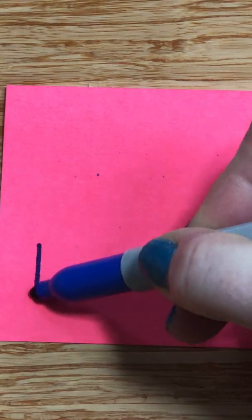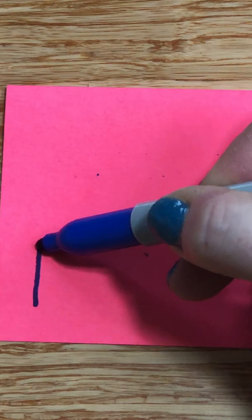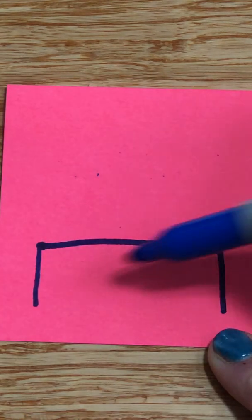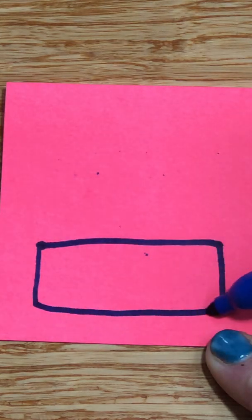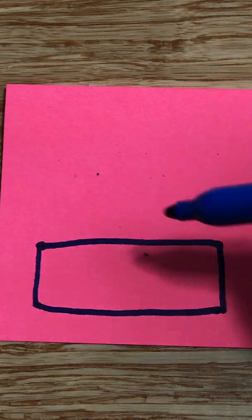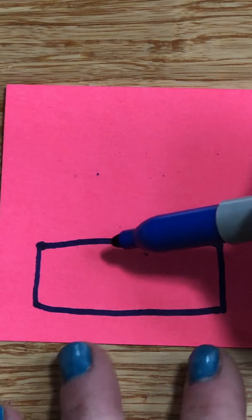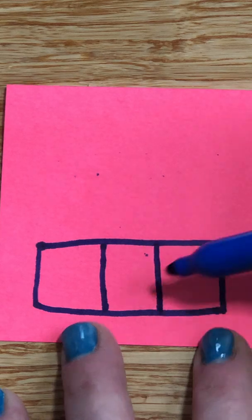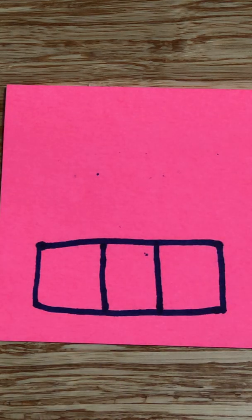First thing you would need to do is draw a rectangle on the bottom. It doesn't need to look perfect, and then you go ahead and draw two lines coming down. That creates your three boxes on the bottom.